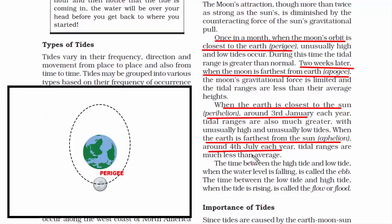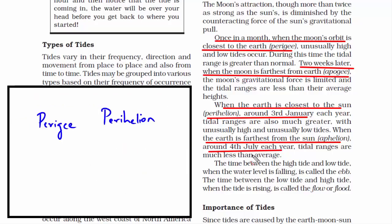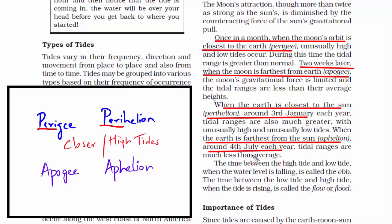Four things to remember: when the moon is closest to the earth, it's called perigee — that's when we have high tides. When the moon is farthest from the earth, it's called apogee — that's when we have low tides. When the earth is closest to the sun, it's called perihelion — high tides. When the earth is farthest from the sun, it's called aphelion — low tides. Notice the pattern: the prefix 'peri' is associated with high tides, while 'apo' or 'aphelion' is associated with low tides.